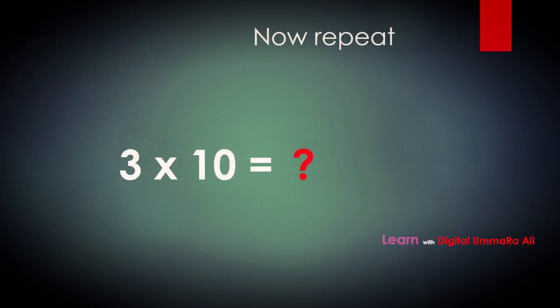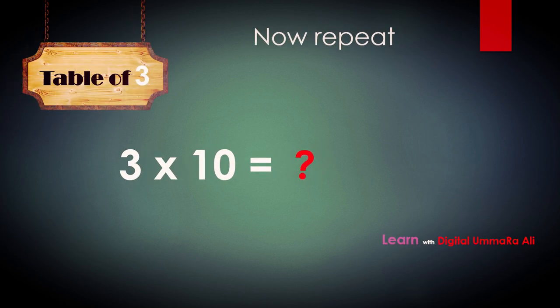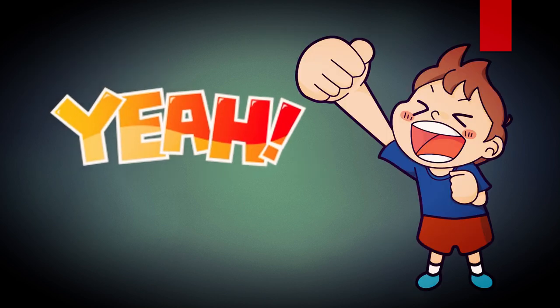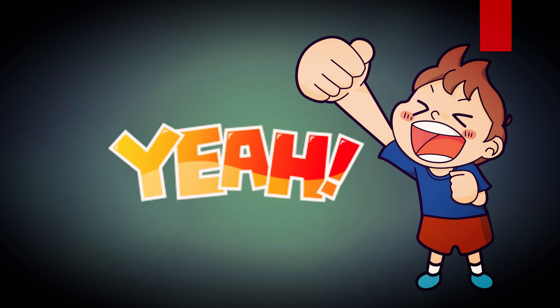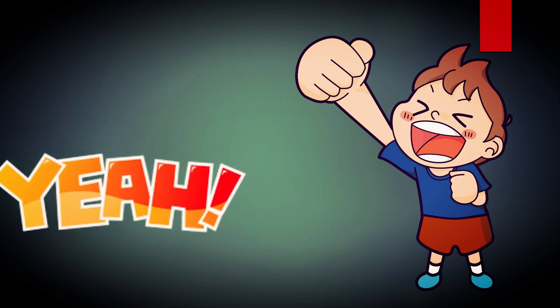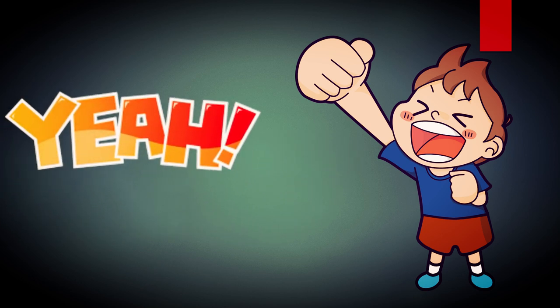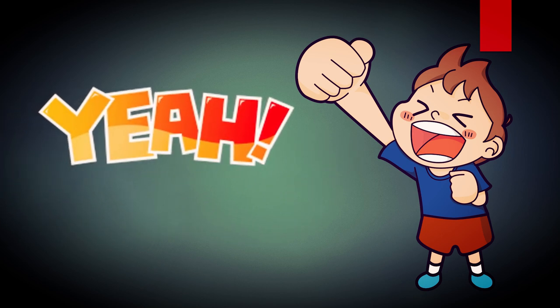Three tens are — so simple, tell me — three tens are thirty. Yay! Now you've learned the table of three. Repeat it again!